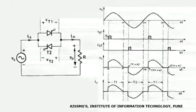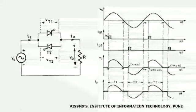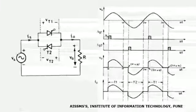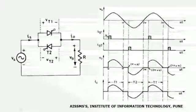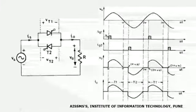Now let us see the construction of an AC voltage regulator. The circuit diagram shows an AC voltage regulator in which two thyristors are connected in anti-parallel. The circuit consists of an AC voltage source having fixed voltage and fixed frequency. The source is connected to the input terminal of the AC voltage regulator, and the output terminal is connected to the load — here we are considering a resistive type of load.